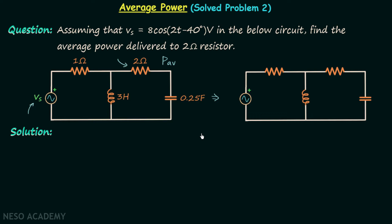First we will focus on the voltage source. According to the question, Vs = 8 cos(2t − 40°), and therefore we can say that Vm = 8 and θV = −40°. Therefore, the phasor of Vs is equal to 8∠−40°.